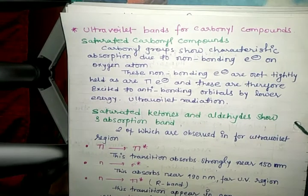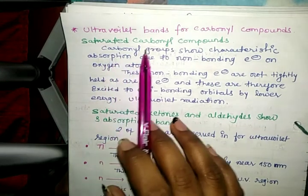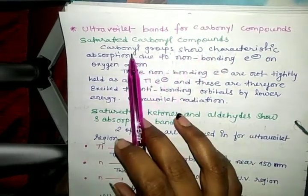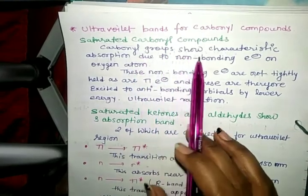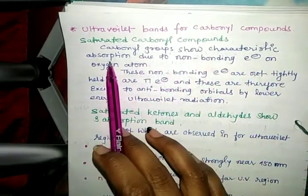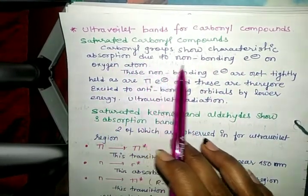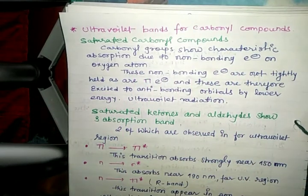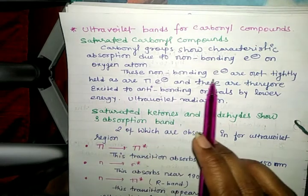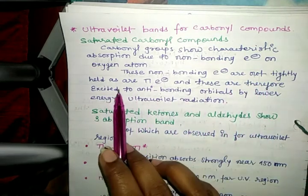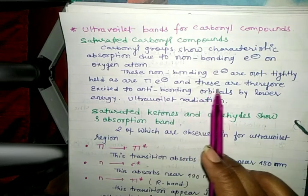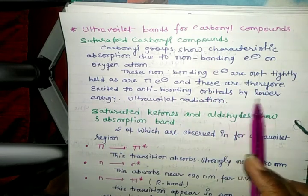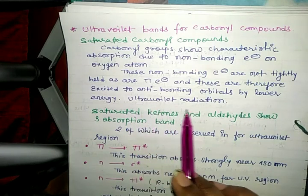First, we discuss saturated carbonyl compounds. These show characteristic absorption due to non-bonding electrons on the oxygen atom. These non-bonding electrons are not as tightly held as pi electrons and are therefore excited to anti-bonding orbitals by lower energy ultraviolet radiation.